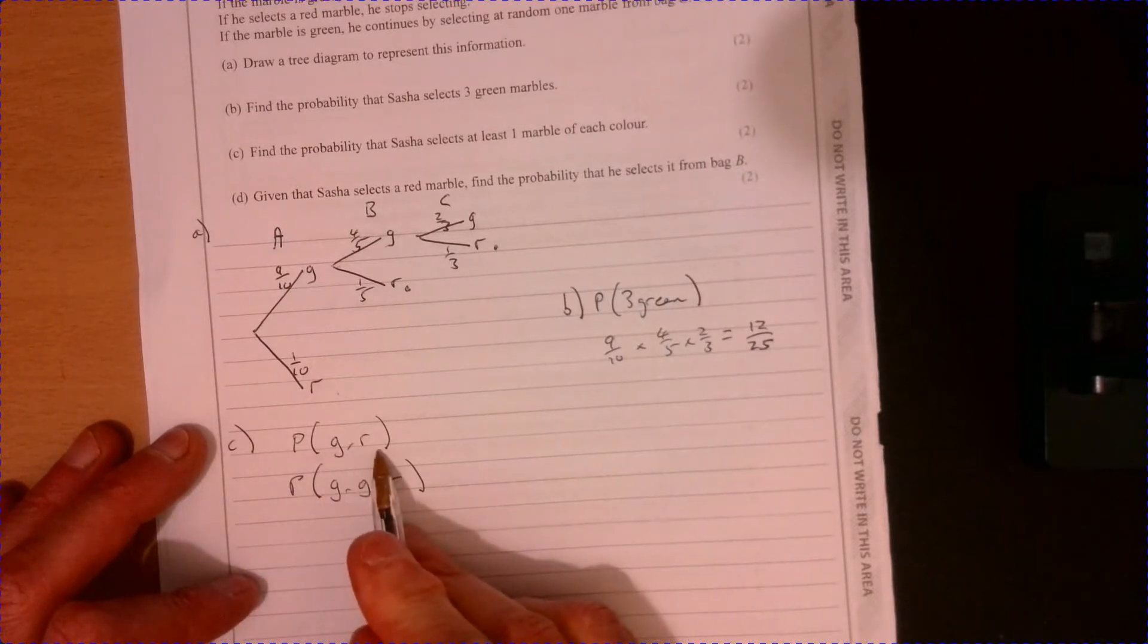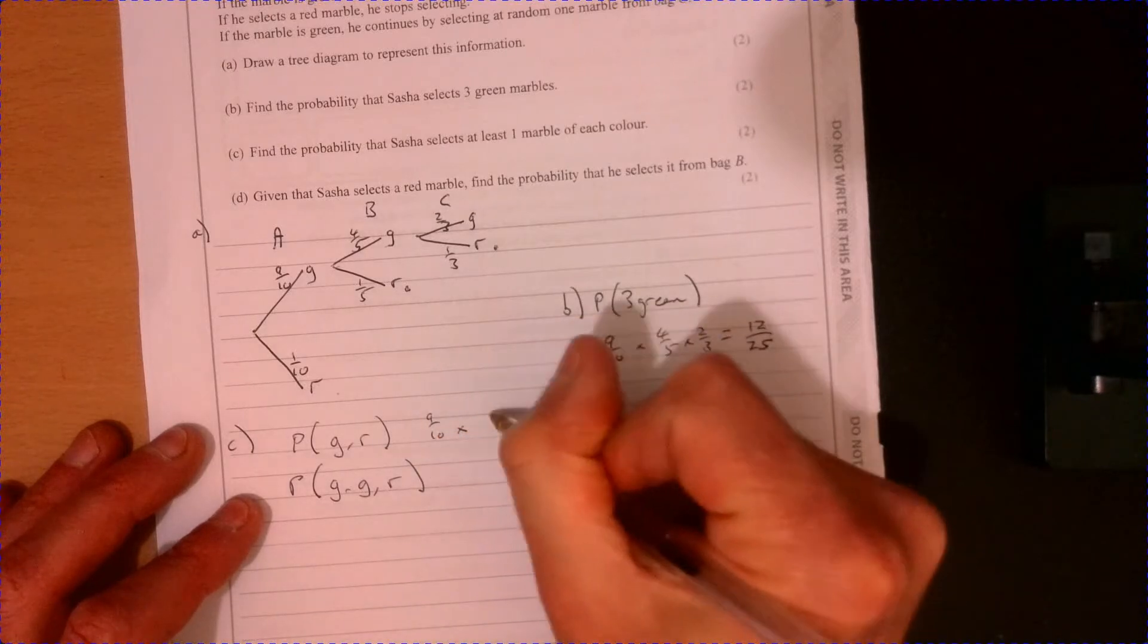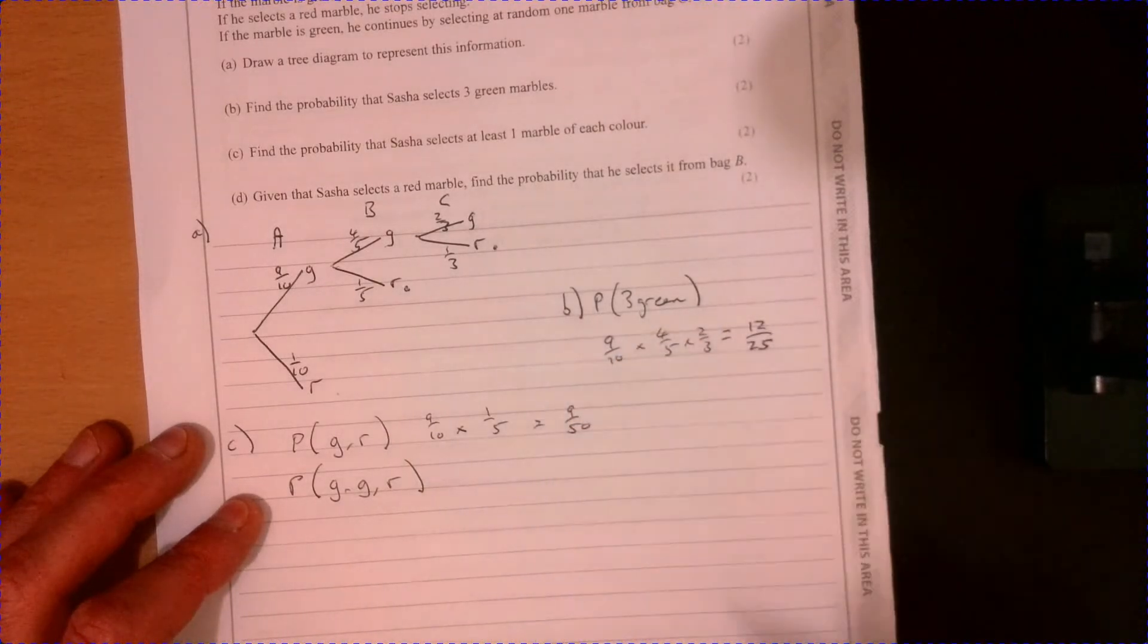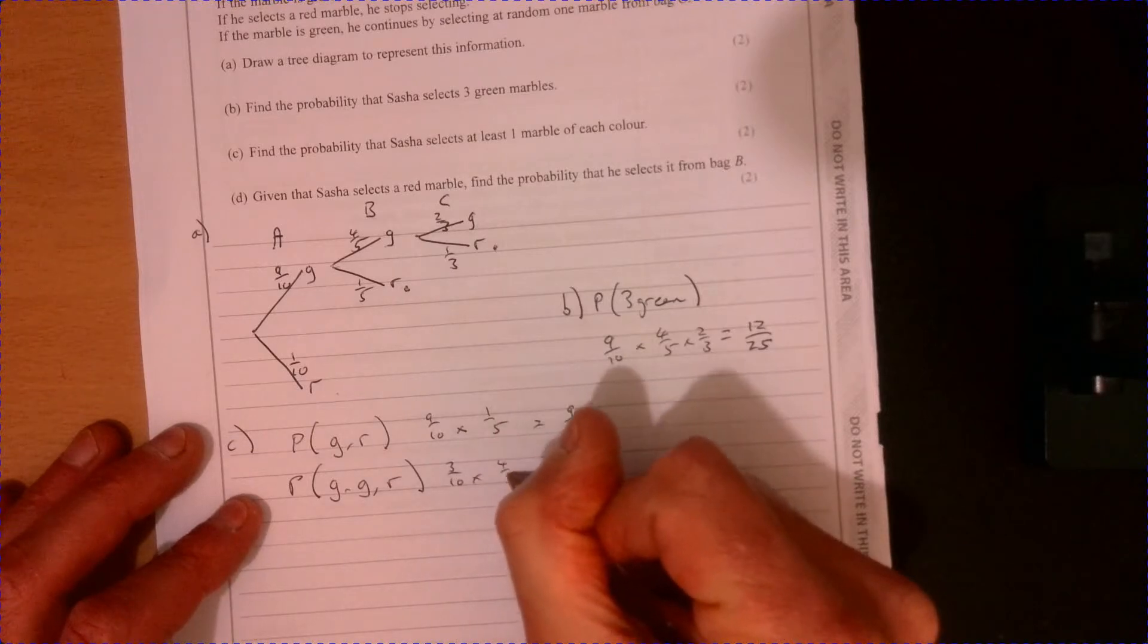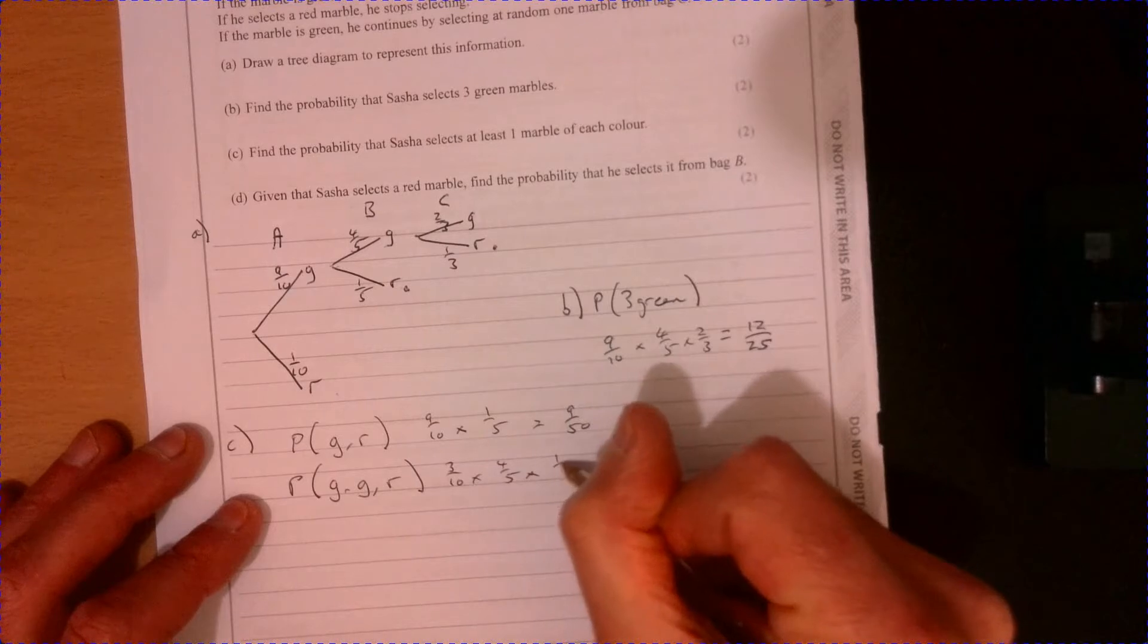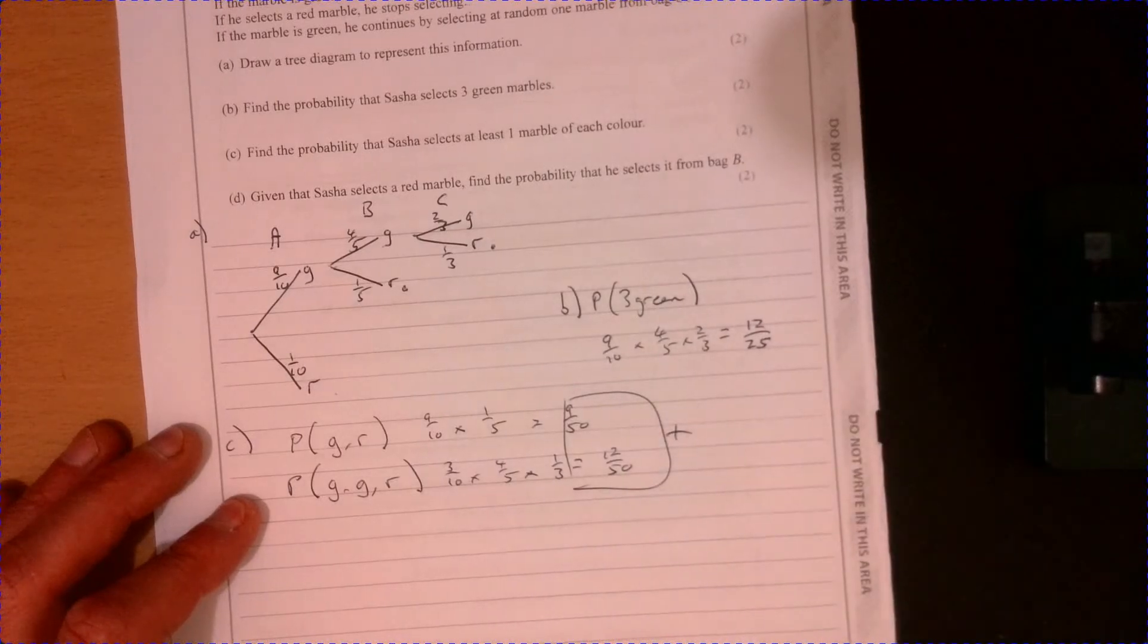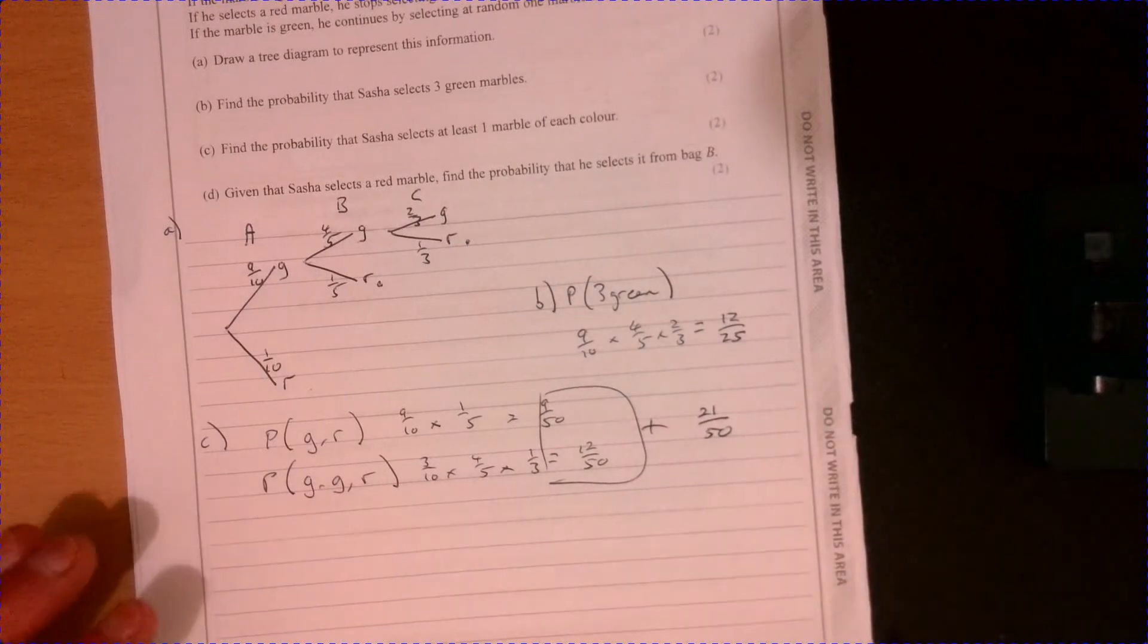So this route would be nine over ten times one over five. That's obviously nine over 50. And this one is nine over ten times four over five, multiplied by one over three, which is 12 over 50. And then we just add those together. And that gives us 21 over 50.